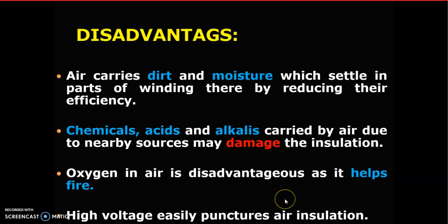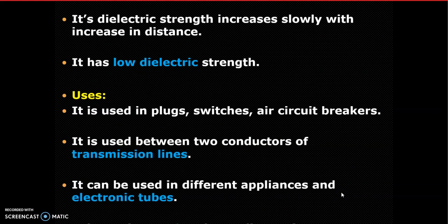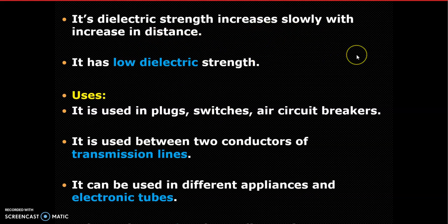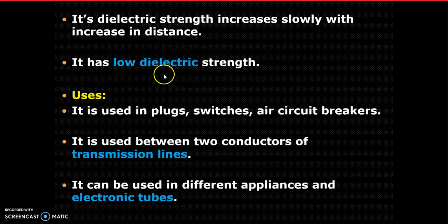High voltage can easily puncture air insulation - at high voltage, air will not withstand the stress. So air is considered a weak insulating material in the category of gaseous insulators. Its dielectric strength increases slowly with increasing distance between electrodes. Compared to other materials like SF6 gas or liquid insulators, its dielectric strength is less.